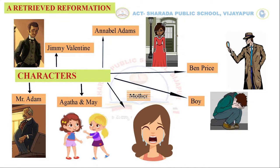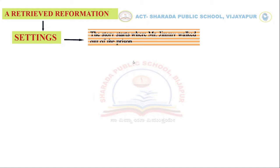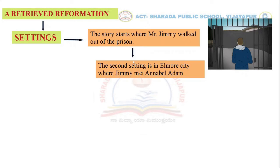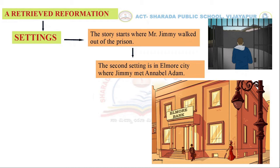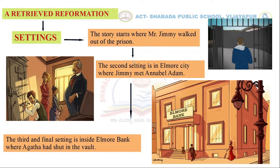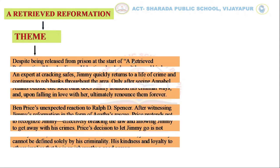Now let us look at the settings. The story starts where Jimmy walked out of the prison. The second setting is in Elmo City, where Jimmy met Annabelle Adams. The third and final setting is inside Elmo Bank, where Agatha was shut in the vault.